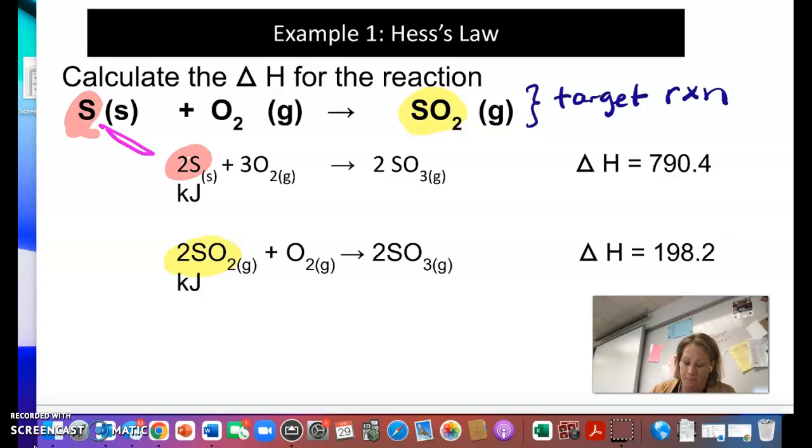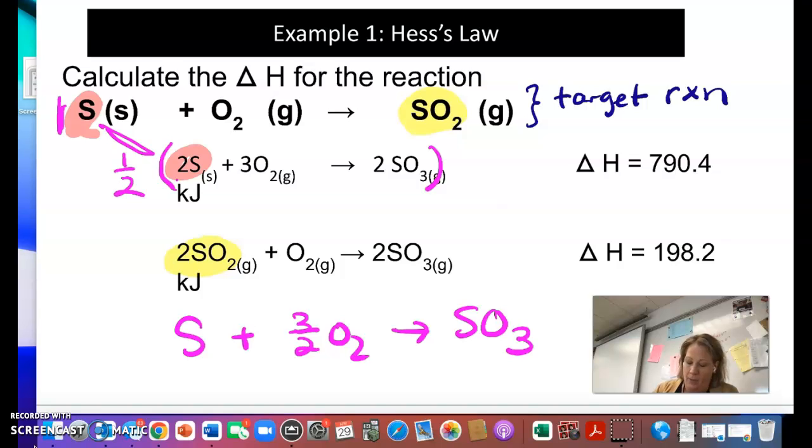So what we do then is we try to really match these. So you can see that this is one mole of sulfur and this is two. So I would have to take that whole reaction and multiply it by one half. So if I do that, I would get sulfur plus three halves oxygen, make sulfur trioxide. And the sulfur is on the reactant side, so I don't need to reverse the reaction. I do have to, though, take the enthalpy and also divide that by two. So when I do that, I get 395.2 kJ.